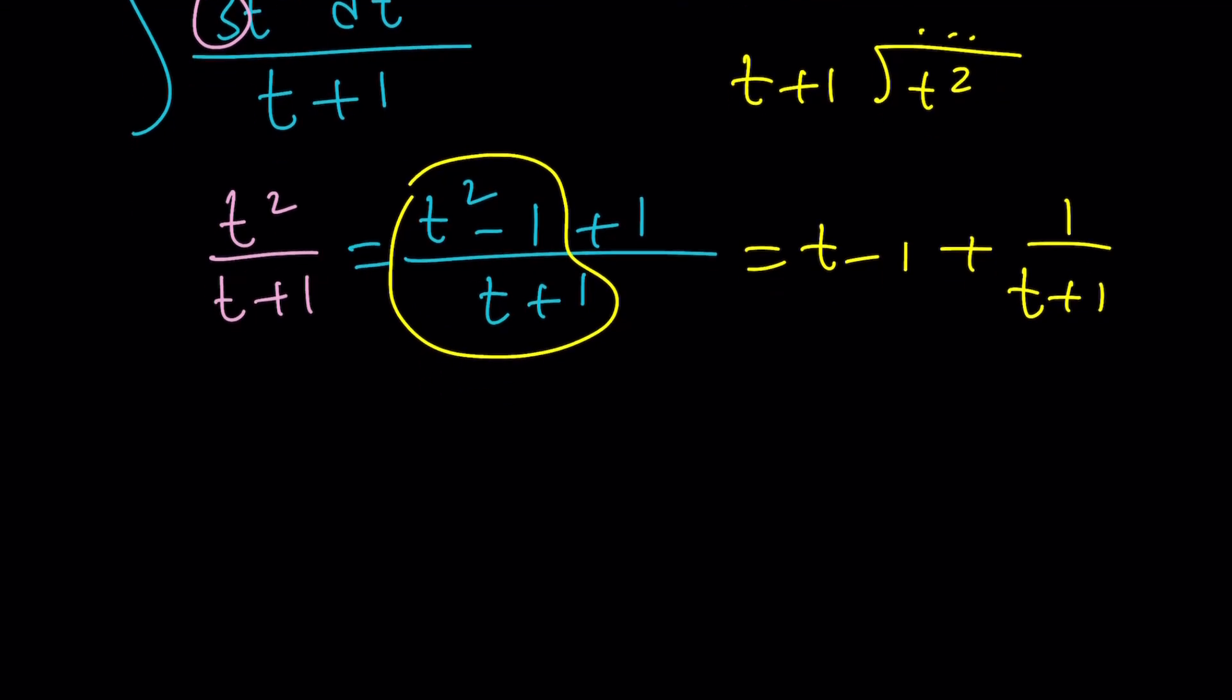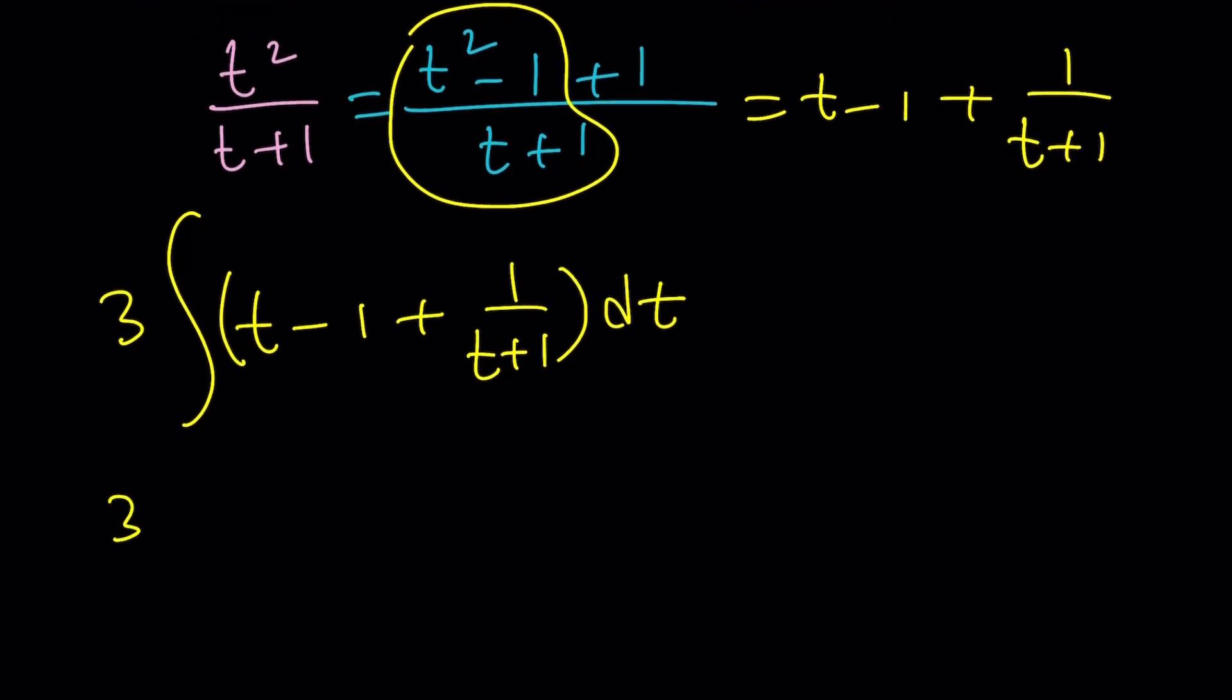Now we're going to multiply this whole thing by 3. So the integral of t minus 1 plus 1 over t plus 1 will be multiplied by 3 dt. And now, if you integrate term by term, the integral of t - think about it. How do you integrate x? You add 1 and divide by that, right? It's just the opposite of power rule. It's going to be t squared divided by 2. The integral of 1 is just going to be t. The derivative of what is 1? The answer is t because t is the variable. And t is fun. And now, this one is ln t plus 1. I'm not putting the constant because I already have it on the right-hand side.